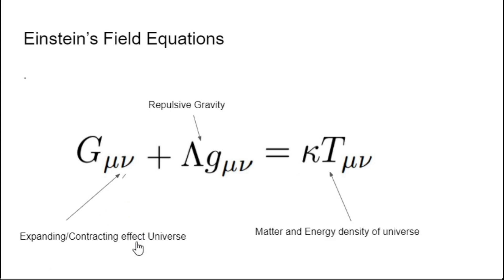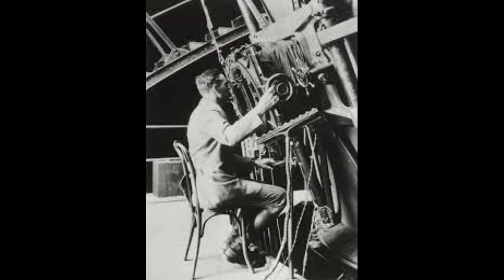This all changed in 1929 when an astronomer named Edwin Hubble observed the sky with his telescope. What he saw and observed changed the course of history and the scientific thought.